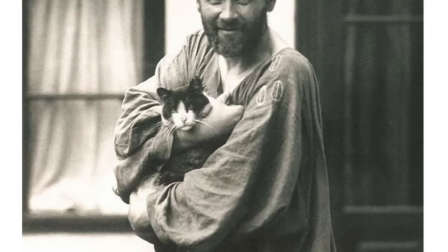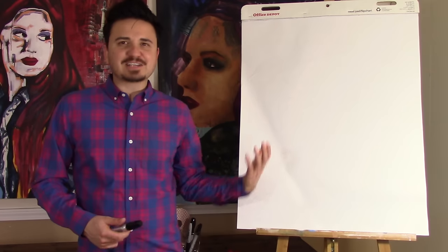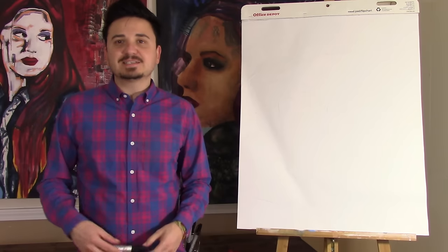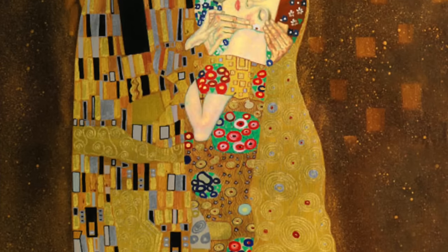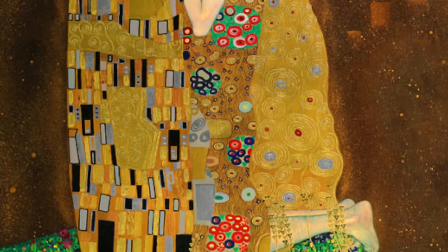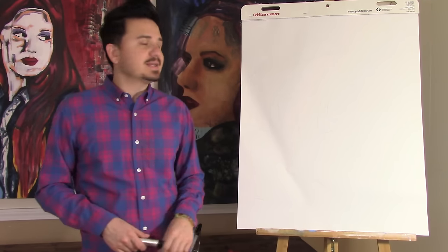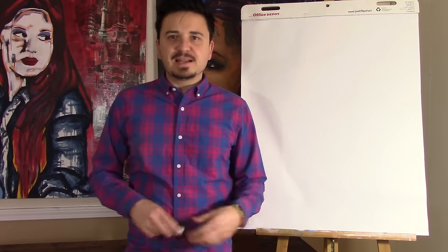So today we're going to try to do The Kiss. We're not going to do the whole thing — The Kiss is a very intricate painting, and that would take hours and hours, so this is going to be like a quick little drawing. It actually took him between 1907 and 1908 to make The Kiss, so obviously we cannot do that in just five or seven minutes.